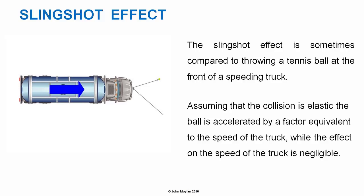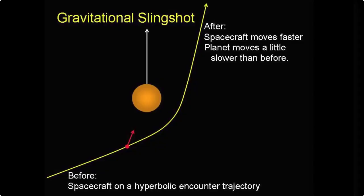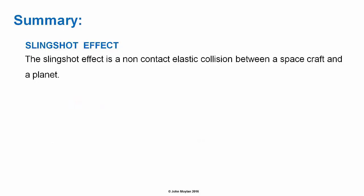The slingshot effect can be compared to throwing a tennis ball at the front of a speeding truck. Assuming the collision is elastic, the ball is accelerated by a factor equivalent to the speed of the truck, while the effect on the speed of the truck is negligible. Because the tennis ball weighs so much less than the truck, the truck's speed is unaffected — the same effect as a gravity assist for a spacecraft from a planet.